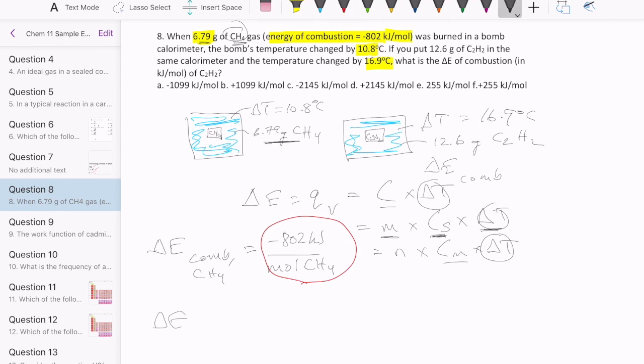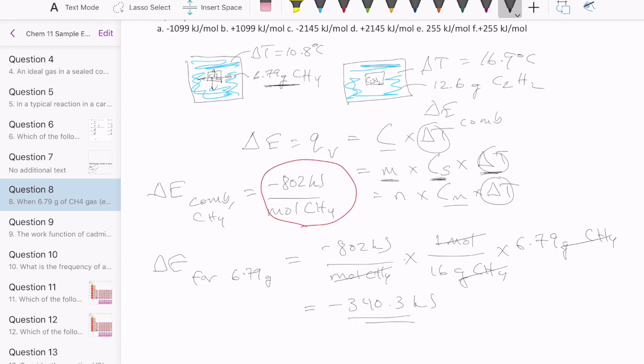And that will tell me exactly how much energy is being released by the combustion of 6.79 grams of CH4 gas. So let's do that. We'll find out that the delta E for the actual reaction for 6.79 grams is going to be 802 kilojoules. This is per mole. And then we'll convert this. So we're going to use our molar mass, 16 grams per mole for CH4. And then we're going to multiply it by 6.79 grams of that CH4. So this cancels, this cancels, and we're left with 340.3 kilojoules. So the actual energy released by the combustion of 6.79 grams of CH4 is this much energy in that bomb calorimeter.